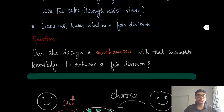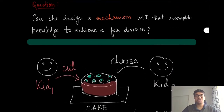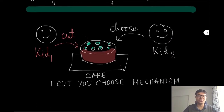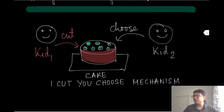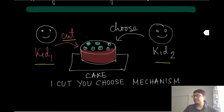People who had siblings might have come across this situation very often. Here is one very interesting and quite well-known solution. Let us call this the 'I cut, you choose' mechanism. What the mother says is that she identifies one of these kids — let's say kid one — to cut the cake, but kid two gets to choose her favorite piece. It will not allow the person who is cutting the cake to pick the first piece; the remaining piece will be picked by kid one. This is the 'I cut, you choose' mechanism.